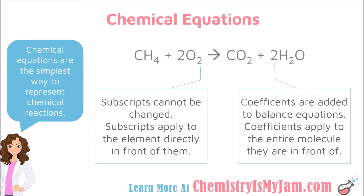Subscripts cannot be changed — they come from crossing down your charges. Coefficients are added to balance the equation and get the same number of each type of atom in the products and reactants. One of the most common mistakes is trying to take a subscript and bring it across the arrow — saying 'there were four hydrogens on the left, so I'll put a four there.' That is incorrect. You do not bring subscripts across the arrow; you use coefficients to balance the equation.